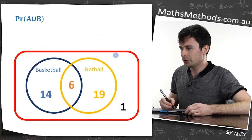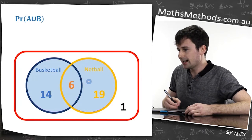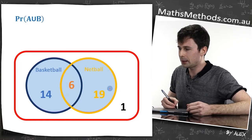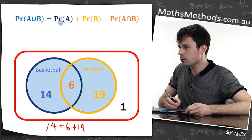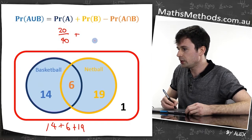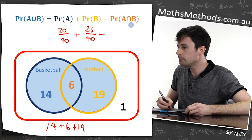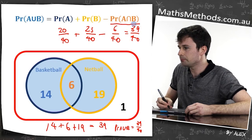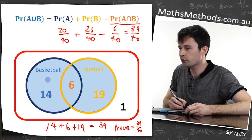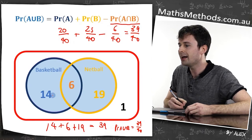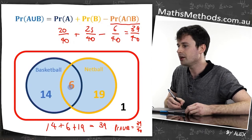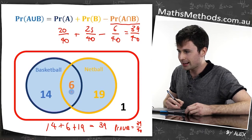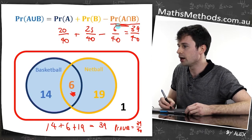The probability of A union B means both of these things together — in this case, the number of people that play basketball and the number of people that play netball. The formula is: probability of A plus probability of B minus the probability of A intersection B. We subtract the intersection because we count that six twice — probability of A is 14 plus 6, probability of B is 6 plus 19, and since we counted the six twice, we minus it once.